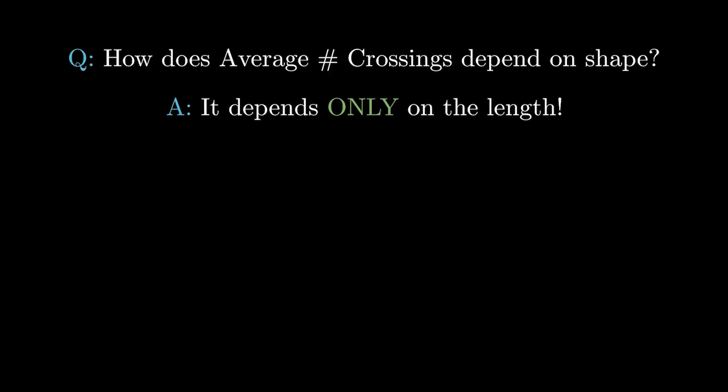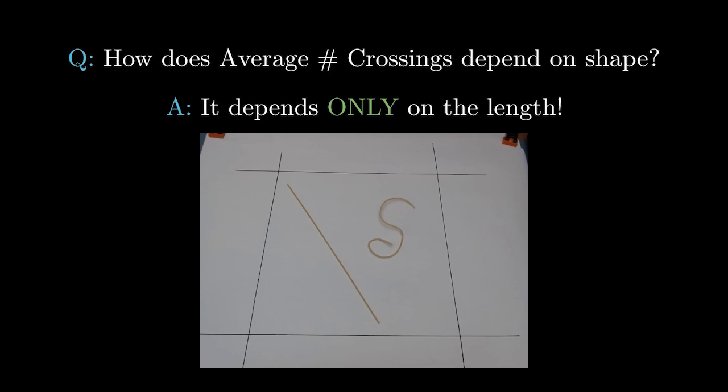To get an intuitive understanding of why this might be true, imagine we have two noodles that are the same length but one is curvy and one is straight. Now imagine that we cut both noodles into tiny tiny pieces. Even though the curvy noodle was curvy, if we cut it into small enough pieces, each piece is approximately straight.